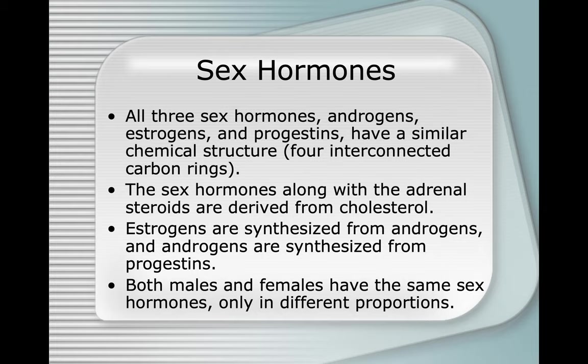Both males and females have the same sex hormones, only in different proportions — so that males will produce sperm and females will produce ova. Females have more luteinizing hormone and follicle-stimulating hormone because it's a more involved process. In males, follicle-stimulating hormone and luteinizing hormone induce sperm and testosterone production.